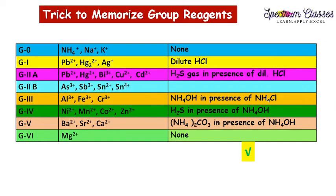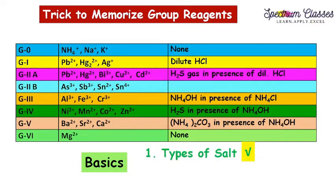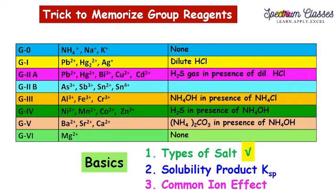Hello everyone, welcome back to Spectrum Classes. This is our second video on the topic of acid and basic radicals. In the previous video we discussed how to memorize these basic radicals in different groups and their group reagents. Now in this video we are going to discuss other basic concepts like solubility product and common ion effect. I am showing you the related lab activities also, so keep watching till the end.